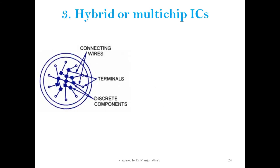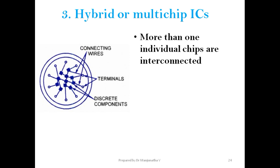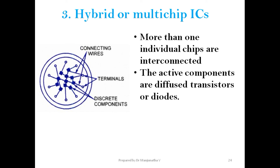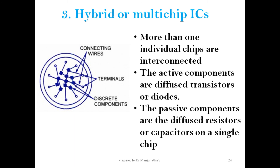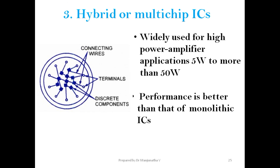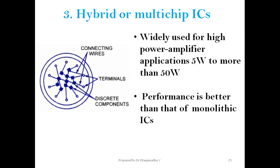The third class of ICs are hybrid or multi-chip ICs, in which more than one individual chip is interconnected. The active components such as transistors and diodes are diffused, and the passive components — diffused resistors or capacitors — are placed on a single chip. These are widely used for high-power applications, from 5 watts to more than 50 watts.